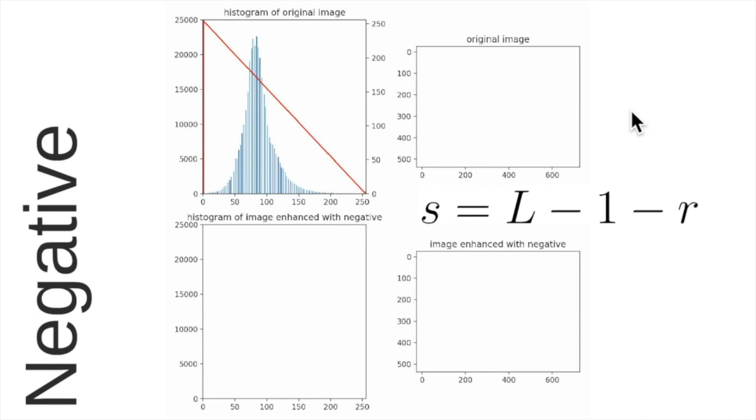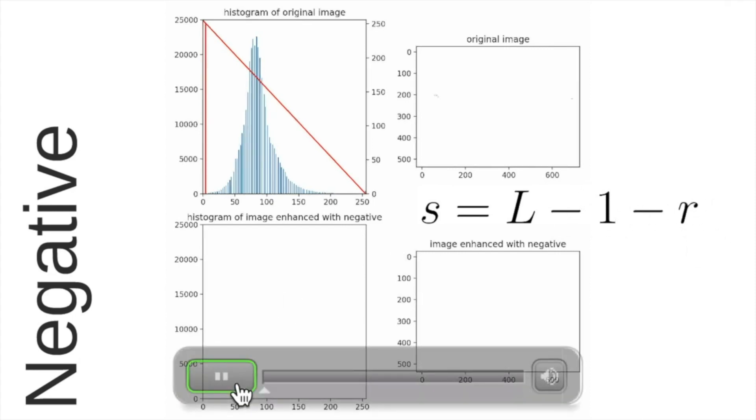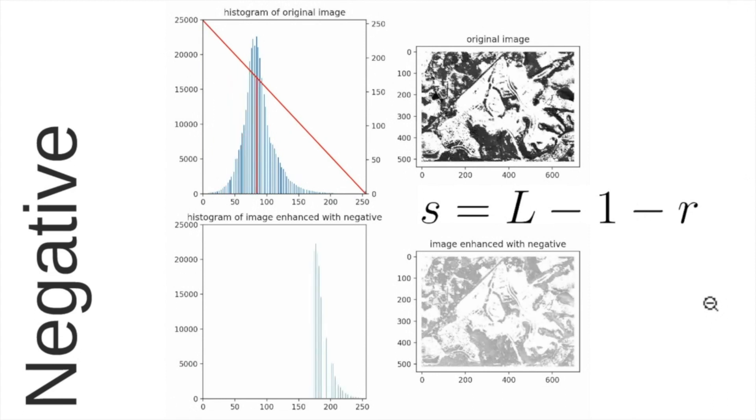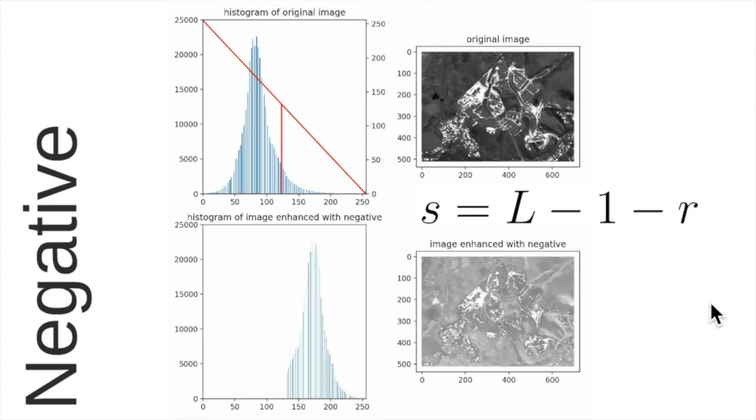The next function is a basic function called the negative function which can be calculated by the highest pixel level L in our case minus 1 minus the original value. So this is a kind of negative transformation in which the original values become their opposite in this limit of L.